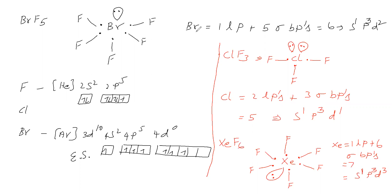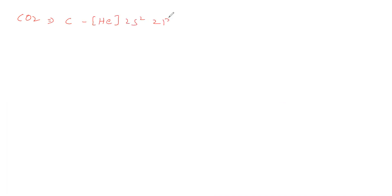Remember that hybrid orbitals will form sigma bond pairs as well as can hold lone pairs. Now we will take the molecule in which a pi bond is present — carbon dioxide. In carbon dioxide, the central atom is carbon. Carbon's electronic configuration is helium 2s2 2p2. Now 2s is having one orbital and 2p is having three orbitals.